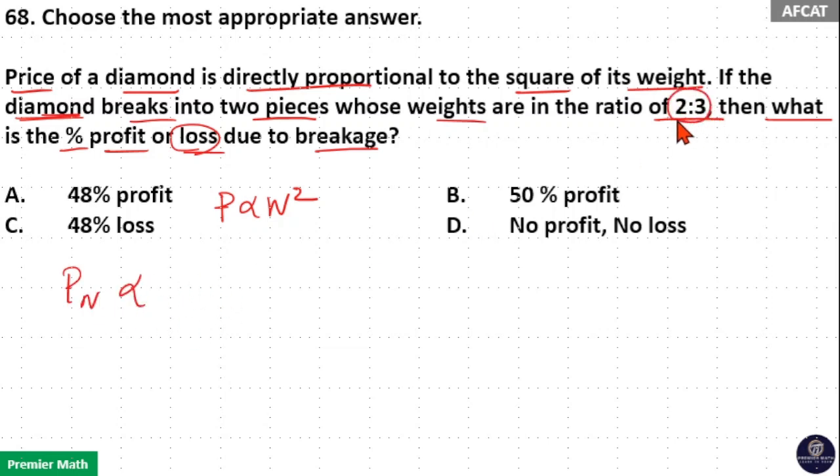Here, new weights are in the ratio 2 is to 3. That is, one piece is 2 parts and the other piece is 3 parts. Total is 2 plus 3, which is 5 parts. So, price is also directly proportional to 2 by 5 whole squared plus 3 by 5 whole squared.